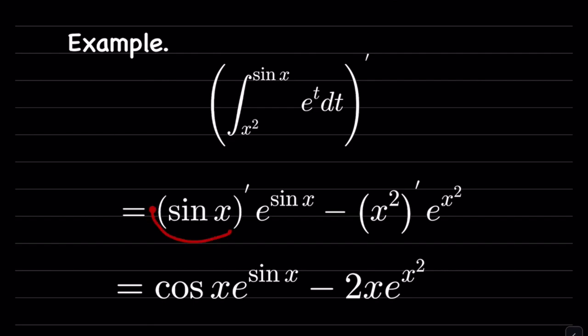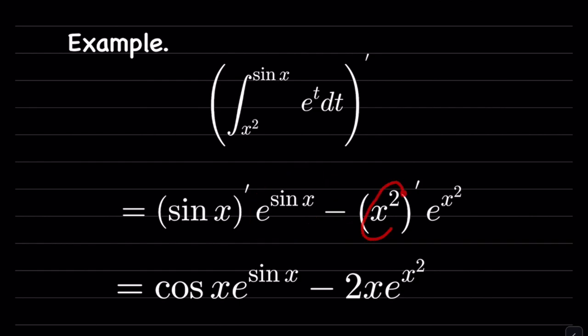So you see, it's the derivative of the upper bound, multiplied by the function e to the t, but t replaced by the upper bound, minus the derivative of the lower bound, multiplied by the function but t replaced by the lower bound. That's how you use the Leibniz rule to differentiate this type of function.